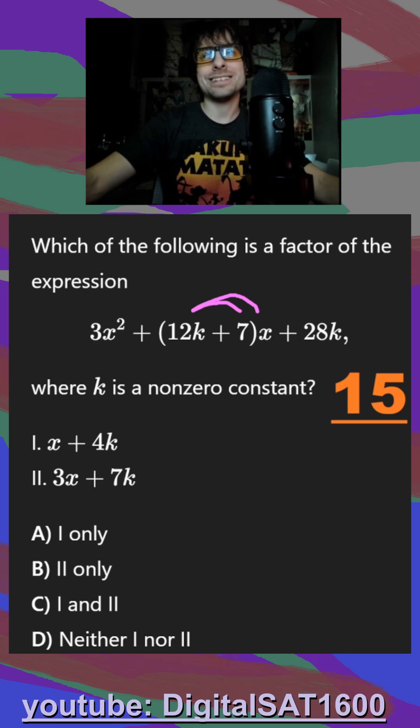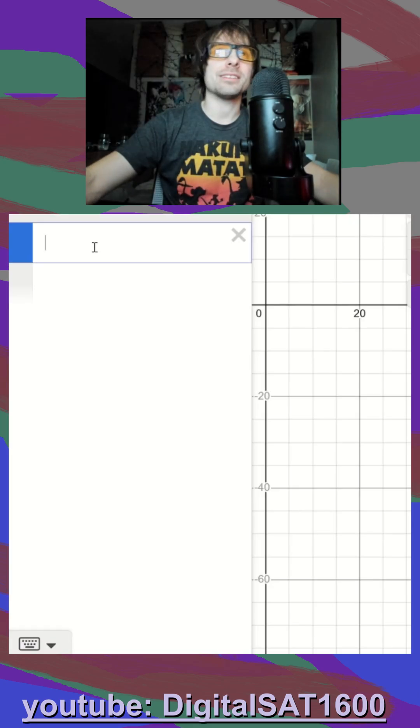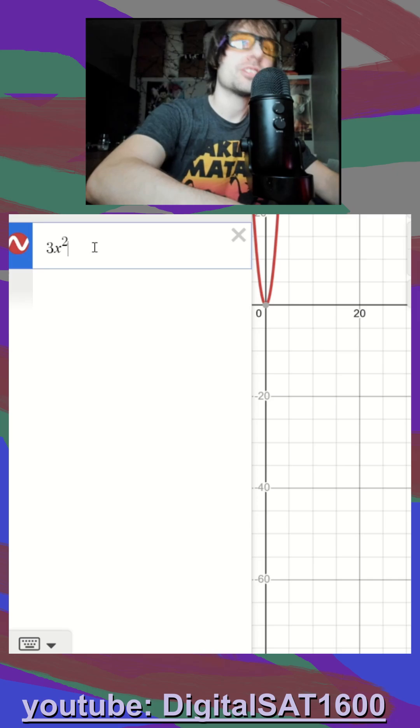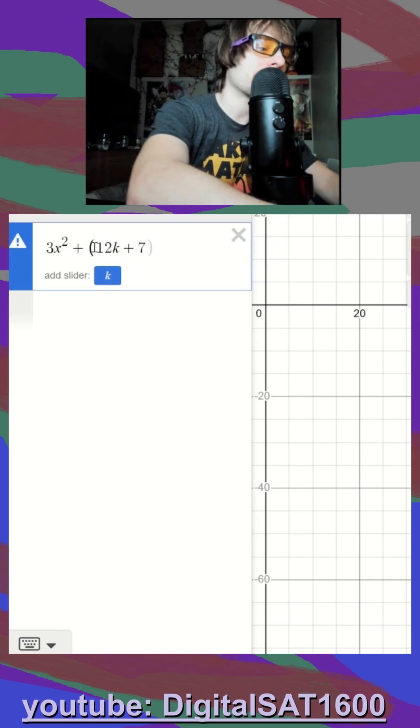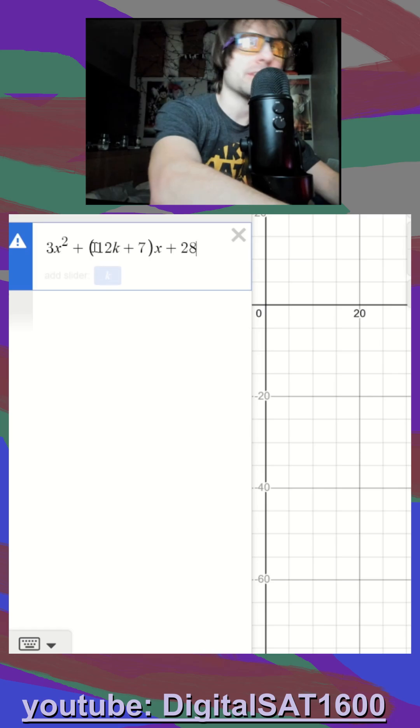But it's honestly really easy to just open Desmos and slam this equation in there. So I throw that. I do the 12k plus 7 in front of our x value, and then finally 28k.